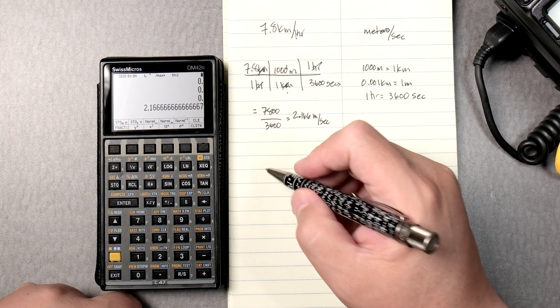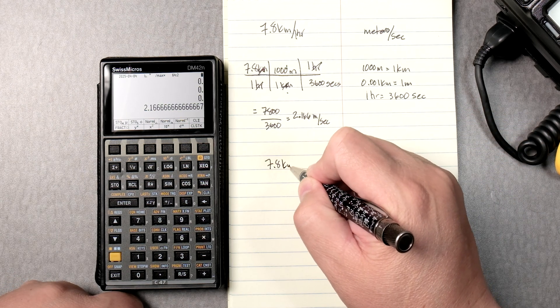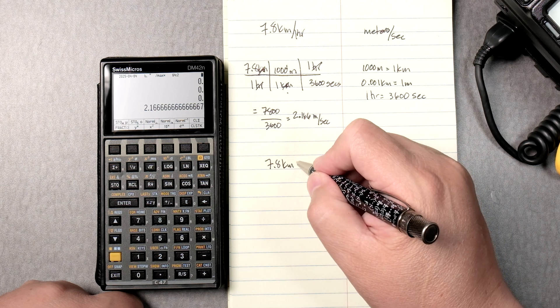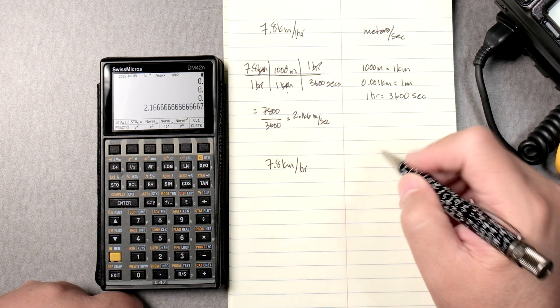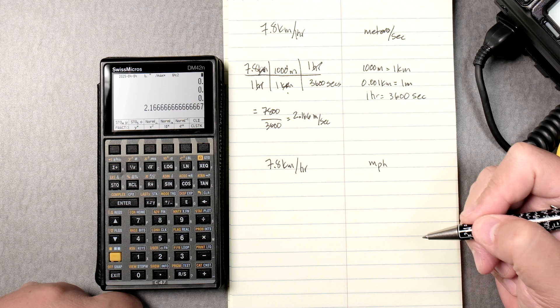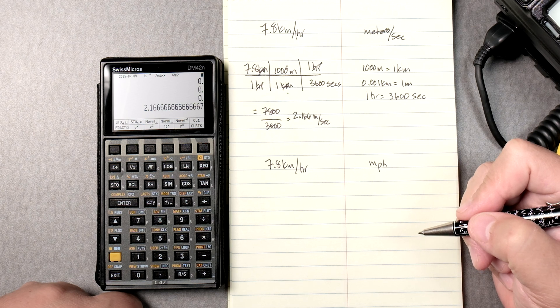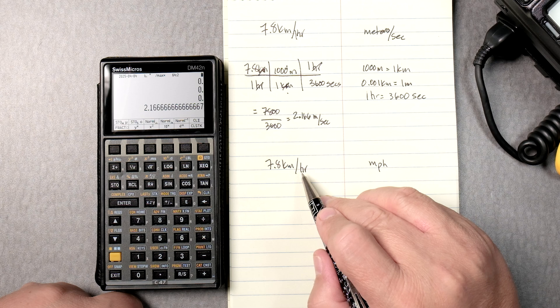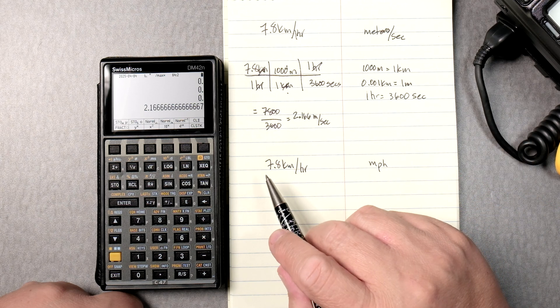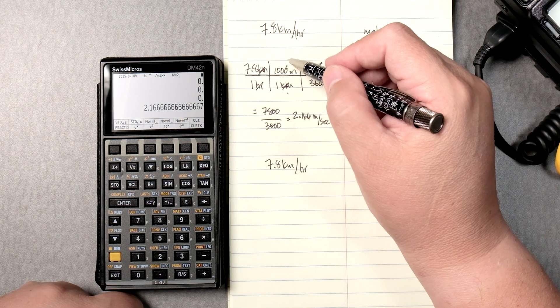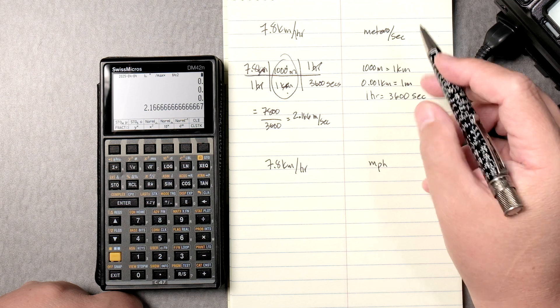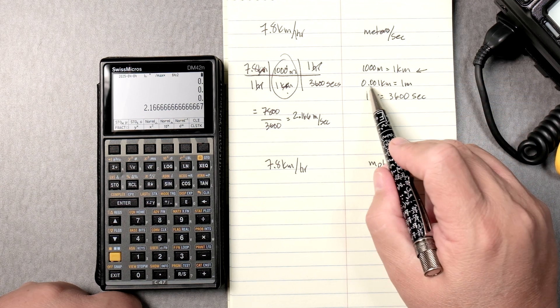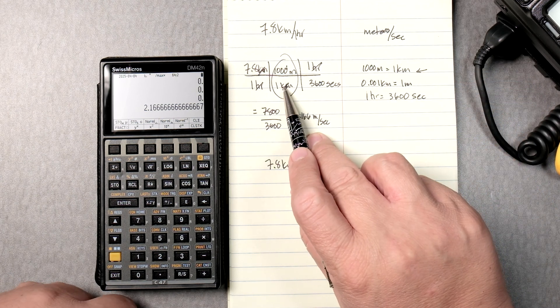Let's say we want 7.8 kilometers per hour and we want it at miles per hour. Not a problem. But before I do that, this conversion factor here, we use this one. Why don't you try this conversion factor in here?